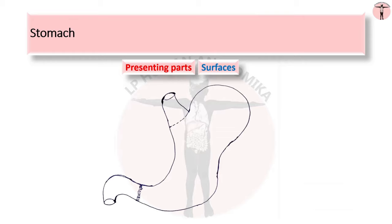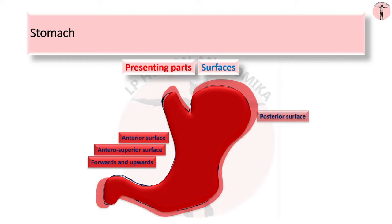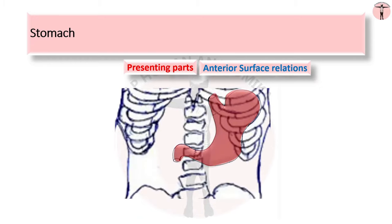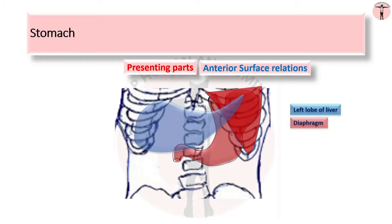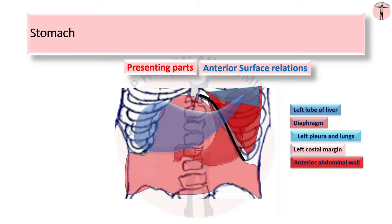The stomach has two surfaces. The anterior surface, also called the anterior-superior surface, faces forwards and upwards. The posterior surface, also called the posterior-inferior surface, faces backwards and downwards. The anterior surface is related to the left lobe of the liver, the diaphragm attached to the ribs, the left pleura and lung in the space between the ribs and diaphragm, the left costal margin, and the anterior abdominal wall below the costal margin.